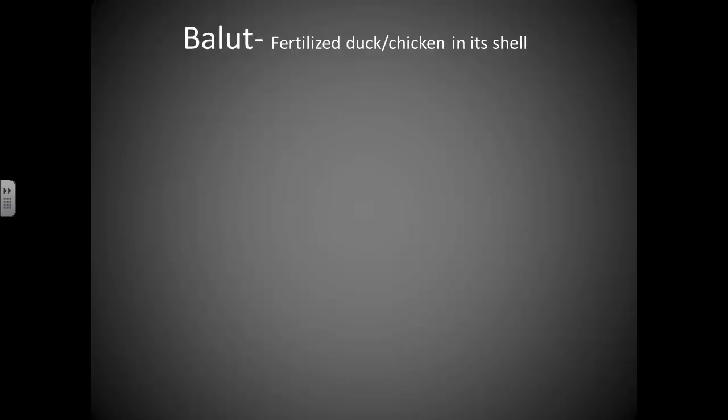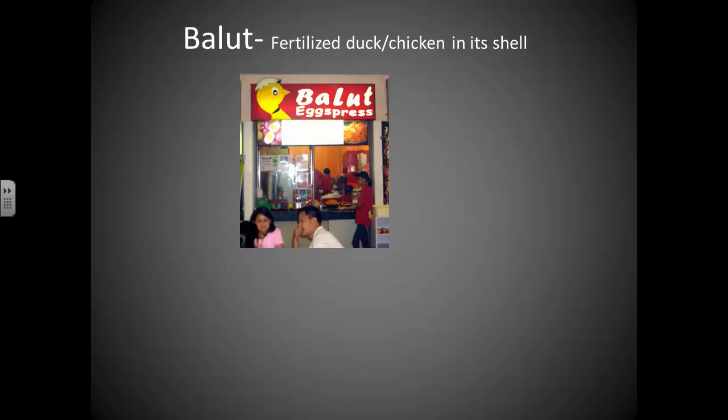But people do eat fertilized chicken and duck eggs. They're actually pretty common. Not so much here in different parts of Asia that are common type of food. And it's called a balut, and it's basically a fertilized duck or chicken egg that is eaten in its shell. You buy them. They're usually like boiled or steamed, and you might eat it with vinegar or soy sauce. And basically, you break open the egg, and inside is the embryo. You can get them in a little kiosk, like you might find at the mall. This is a balut express.